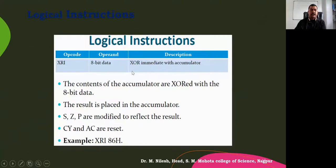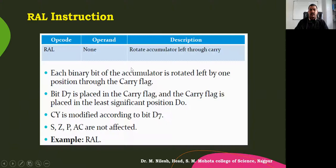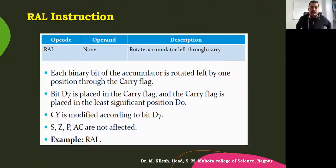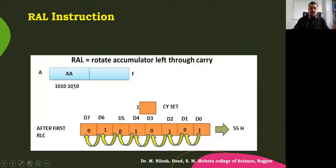The logical instruction we are expecting to use here — we are going to use the RAL instruction. We might use either RAL or RLC. Each binary bit of the accumulator is rotated left by one position through the carry flag. The carry flag is set or reset according to the condition of the most significant bit. This is how the RAL instruction works.